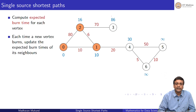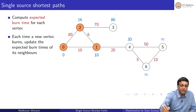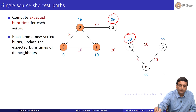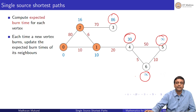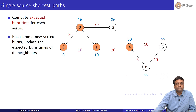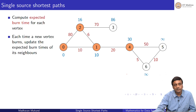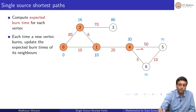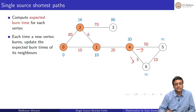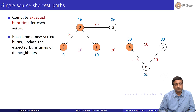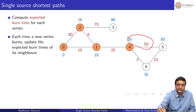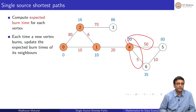Among unburnt vertices, I find that vertex 4 is going to burn at time 30, so I burn it. Now time is 30. Once I have burnt vertex 4, I have started two new fires. Vertex 6 is going to burn at time 30 plus 5 and vertex 5 will definitely burn by 30 plus 50. So I can update those to 35 and 80.